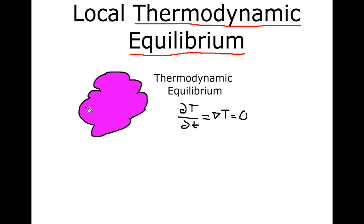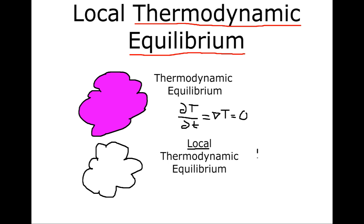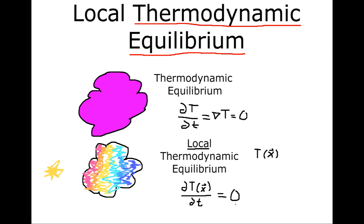Local thermodynamic equilibrium, on the other hand, relaxes some of these assumptions. Local now means that this cloud can have a spatially varying temperature — it can have a temperature that's a function of position. For example, if I have a bright star over here heating up this cloud, this cloud can have a spatially varying temperature, ranging from a hot temperature on the irradiated side by the star, with a temperature gradient across that cloud going to a lower temperature on the far side. So this cloud would not satisfy global thermodynamic equilibrium because there is a temperature gradient across the cloud. However, it can still satisfy local thermodynamic equilibrium. In LTE, the change in temperature at a specific point with respect to time is zero, but that equilibrium temperature can still be spatially dependent. And we've clearly relaxed the assumption that the gradient of our temperature field is zero.